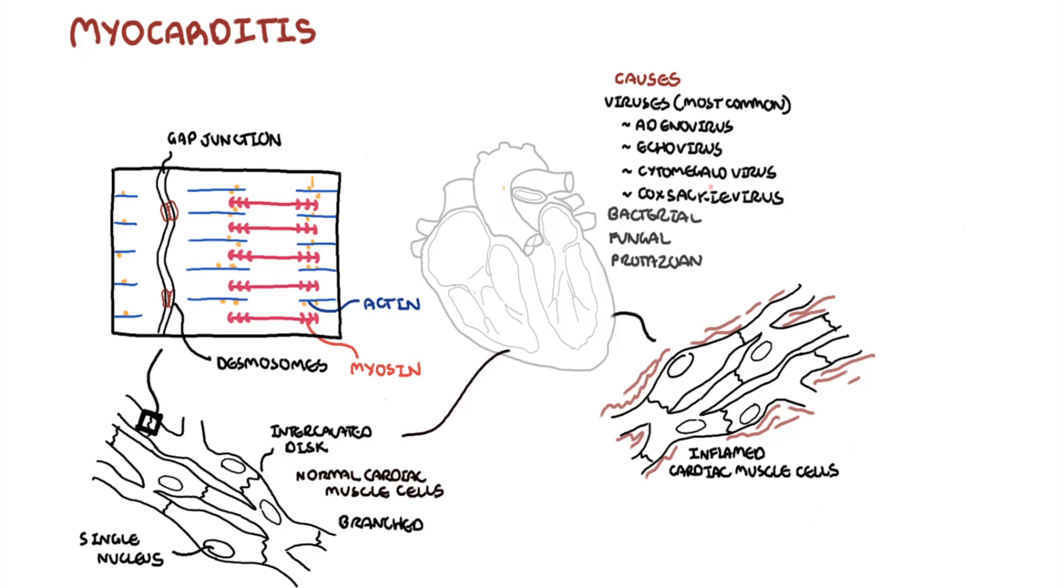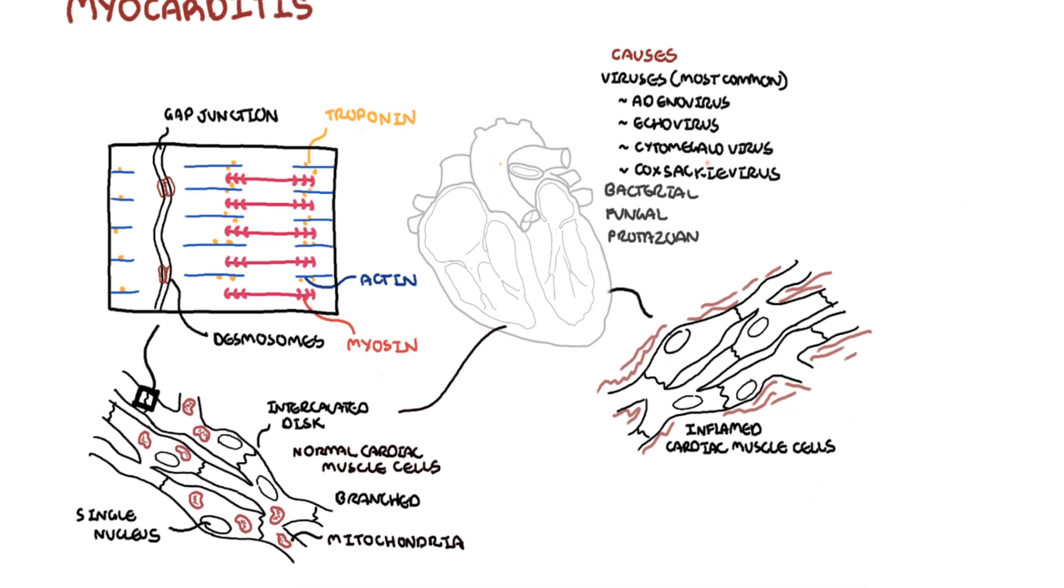Troponin is attached to tropomyosin and is involved in muscle contraction. Cardiomyocytes contain many mitochondria to produce large amounts of adenosine triphosphate, ATP, and myoglobin to store oxygen to meet the demands of muscle contraction.